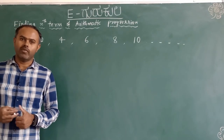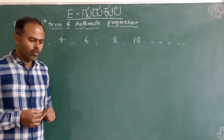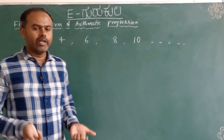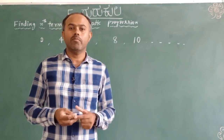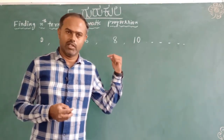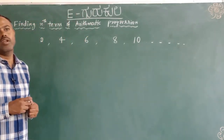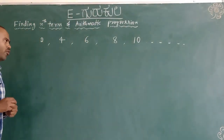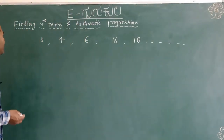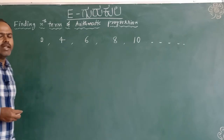Here is an example of arithmetic progression: 2, 4, 6, 8, 10. Now let us see how to find the nth term of this particular arithmetic progression.